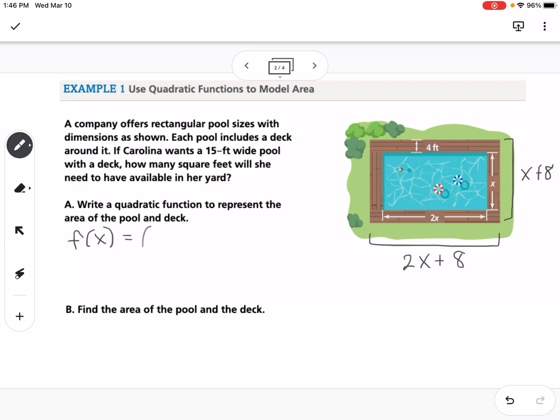So we can write a function, f of x, we can say 2x plus 8 times x plus 8, and then we can FOIL that and get 2x squared plus 16x plus 8x plus 64. So there's a quadratic function to represent the area.